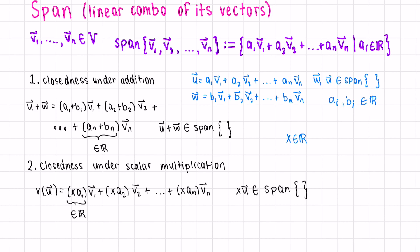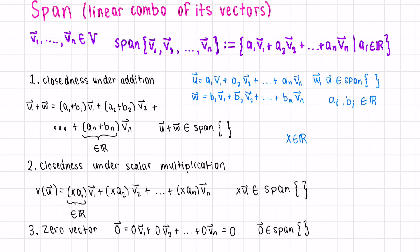What about the zero vector? We could write the zero vector as 0*v1 plus 0*v2 plus all the way up till 0*vn — all the coefficients zero — so we can say that the zero vector is also in the span. Thus we can conclude that span(v1, ..., vn) is a subspace of V.